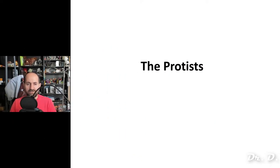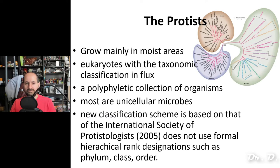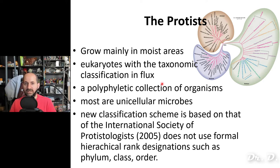To start our tour of the eukaryotes, we are going to begin with the protists. Remember, protists are usually single-cellular and usually grow in moist areas. They are eukaryotes in taxonomic flux, meaning there is no kingdom Protist and no particular phyla for protists. Protists can be found in various different phyla and kingdoms — you could find a protist classified as a plant or as an animal. They are polyphyletic, meaning protists can be found in various phyla.